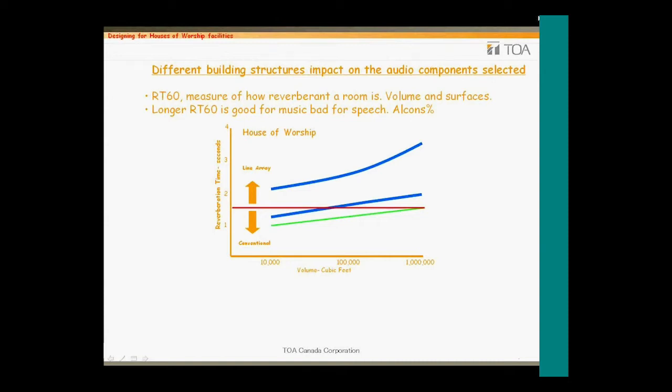Generally, large spaces with hard surfaces will have long RT60 characteristics that would be pleasant to musical performances — this is the area between the two blue lines. However, they can play havoc with the spoken word. In the chart we can see that generally an RT60 greater than 1.5 seconds, indicated by the red line, will require very focused audio from the speakers or a well-distributed speaker array. Ideal reverberation for speech is indicated between the green and the blue line.